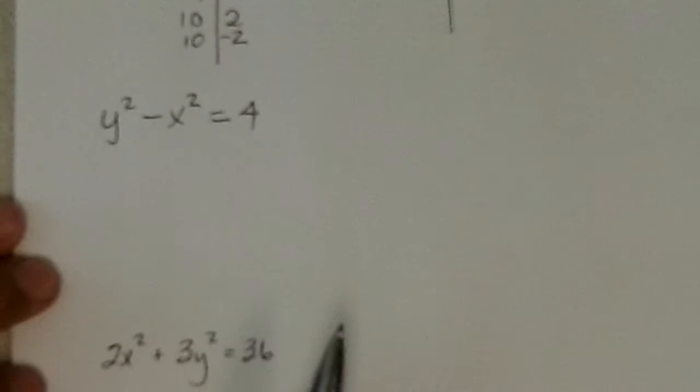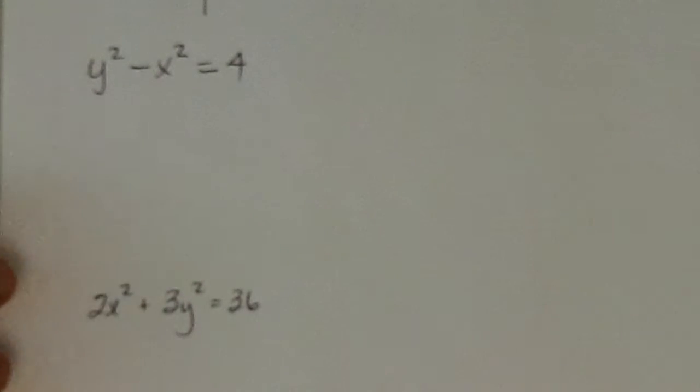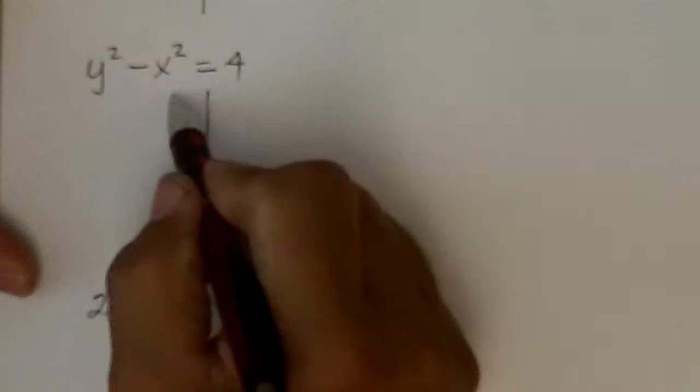All right. Now, let's take a look at the next one I have here, which is y squared minus x squared equals 4. Okay. Let's go ahead again and try to do intercepts.